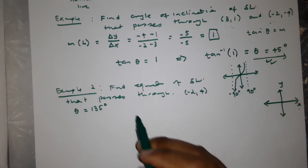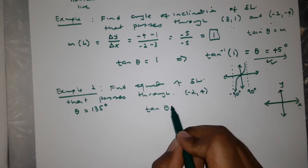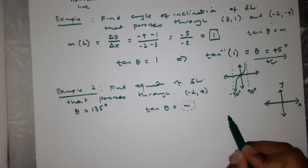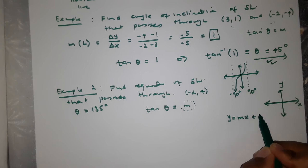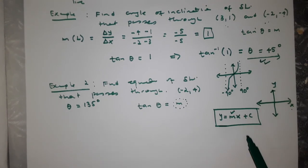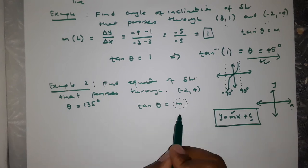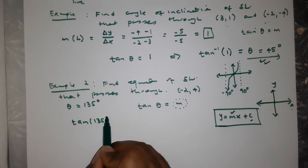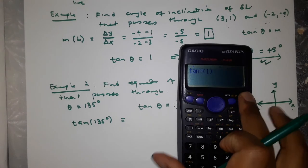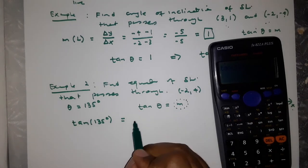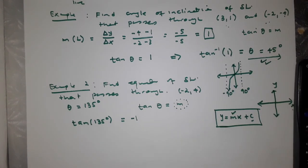You've got the angle and you've got a point. First, you're going to find the gradient using the same equation: tan(θ) = gradient. You want the equation of a straight line in the form y = mx + c, so you need the gradient first. The gradient equals tan(135°). Make sure your calculator is in degrees. tan(135°) = −1. That is your gradient.